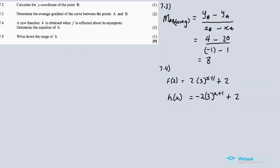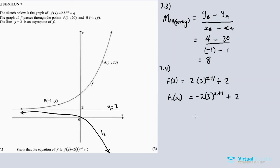7.5, the last question. Write down the range of H. The range of H. Now H has the same horizontal asymptote as F. The range is all the valid y values for the function H. So the range of H is y less than 2, or negative infinity to 2.